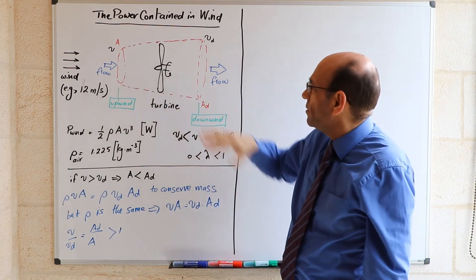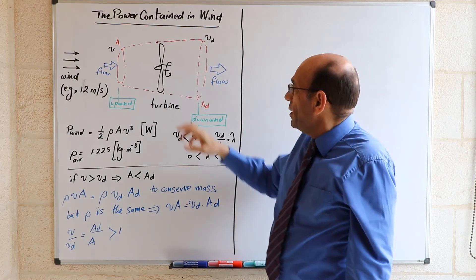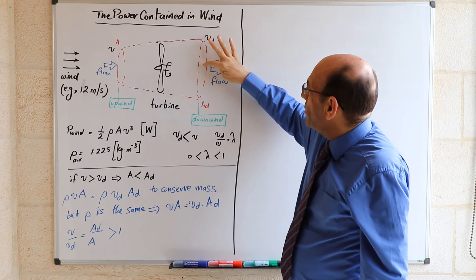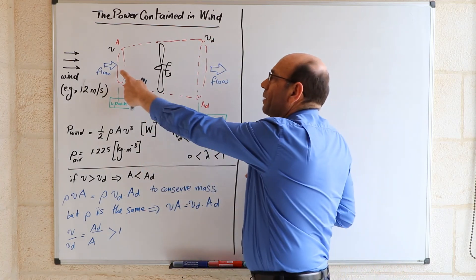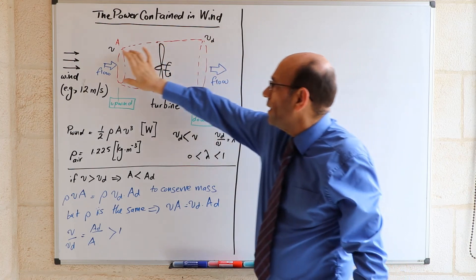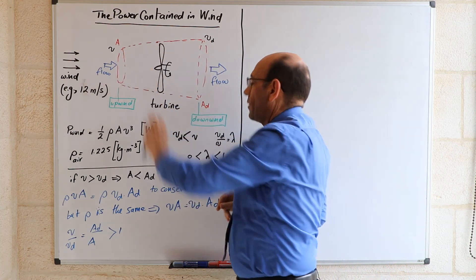So the turbine has extracted the power from the wind. It corresponds to an increase in the cross-sectional area from capital A to AD. And that's why AD is larger than A, and VD is smaller than V.